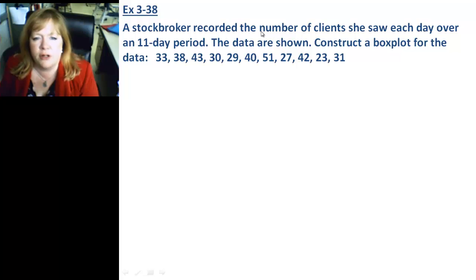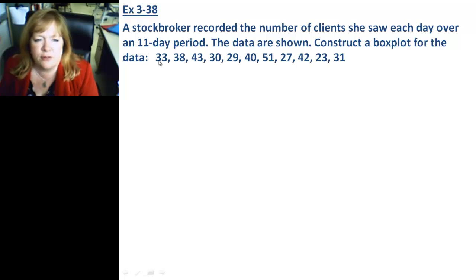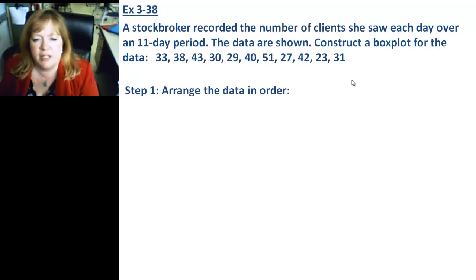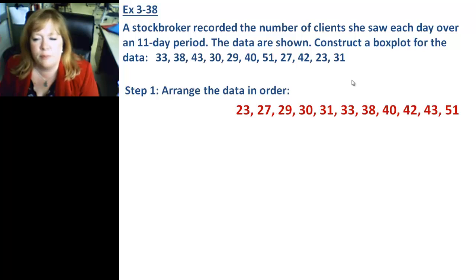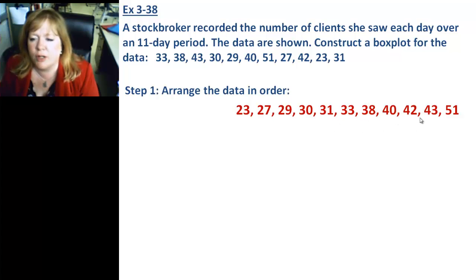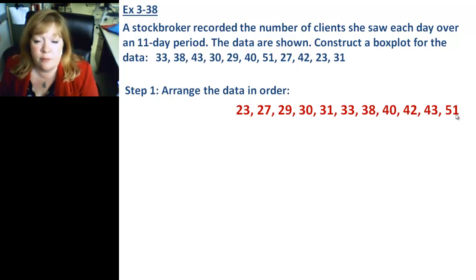Here's a stock broker who recorded the number of clients she saw each day over an 11-day period. The data is shown — construct a box plot for the data. The first step when you're doing this: you'll notice these are out of order, so you need to sort the data. It should be 23, 27, 29, 30, 31, 33, 38, 40, 42, 43, 51.